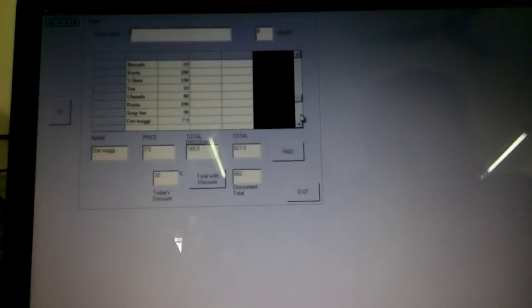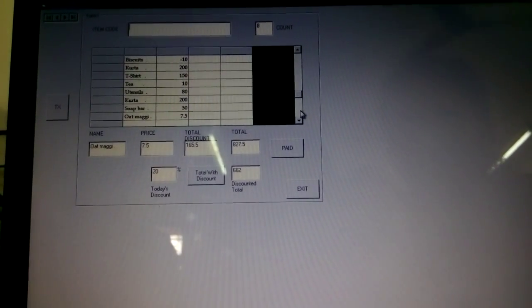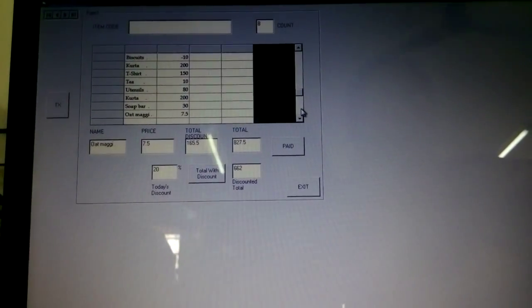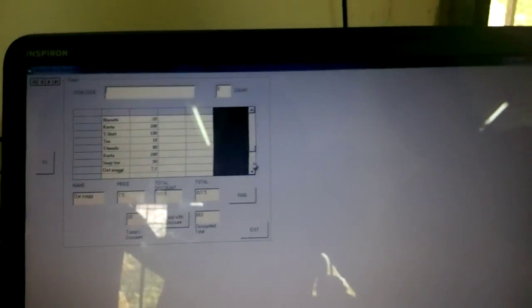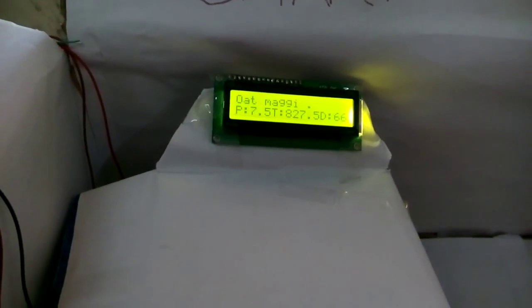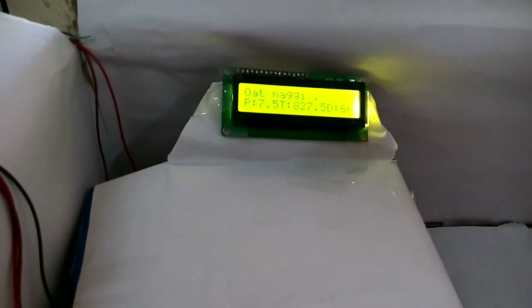The actual price of oats maggie is Rs.15 but 50% discount is applied here. Hence we can see 7.5 at its price. It is displayed on the LCD display also. Its current price is 7.5 and total price is Rs.827.